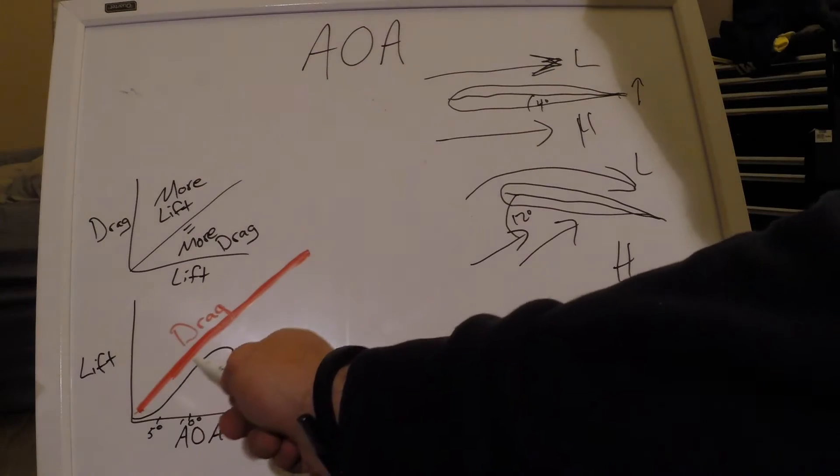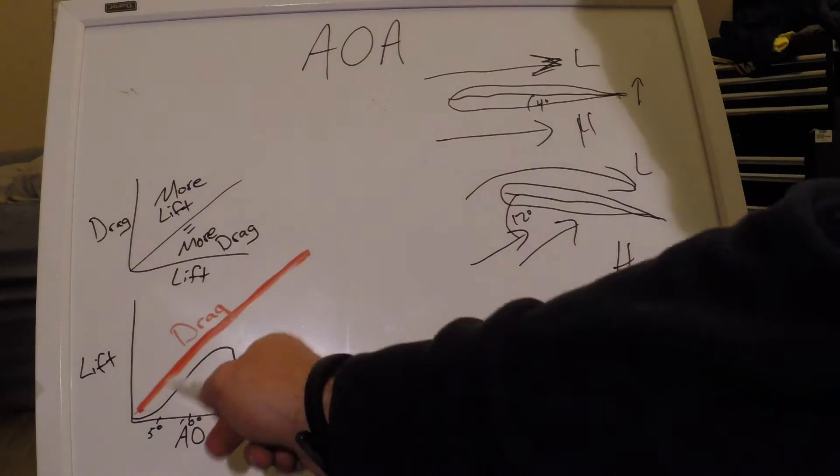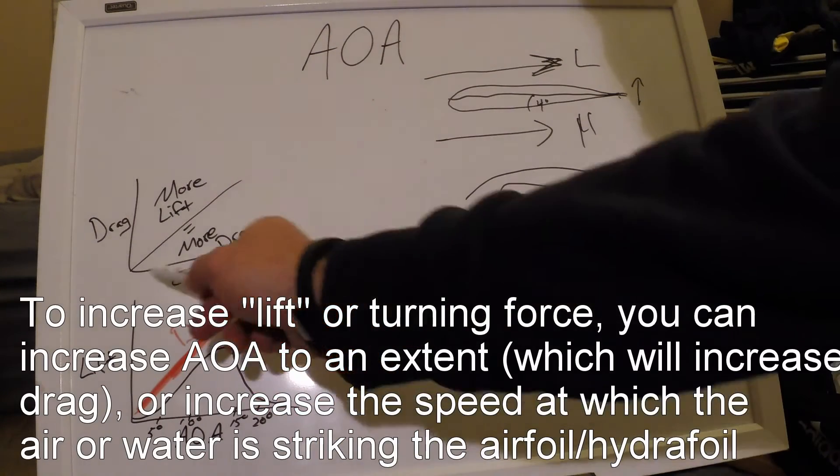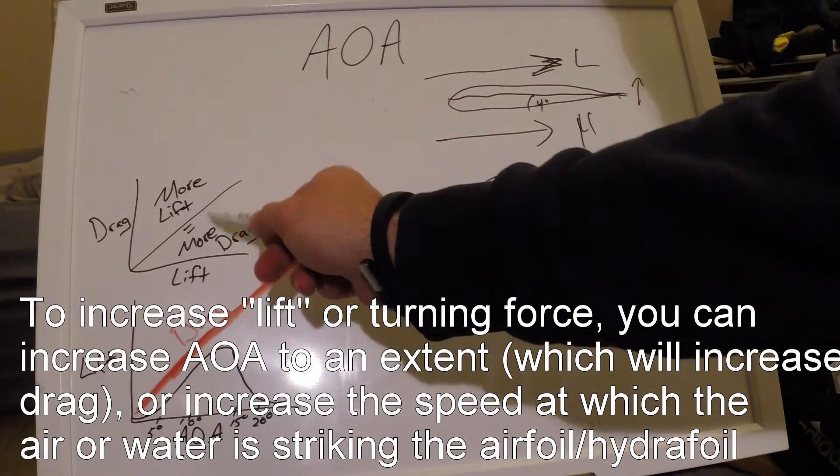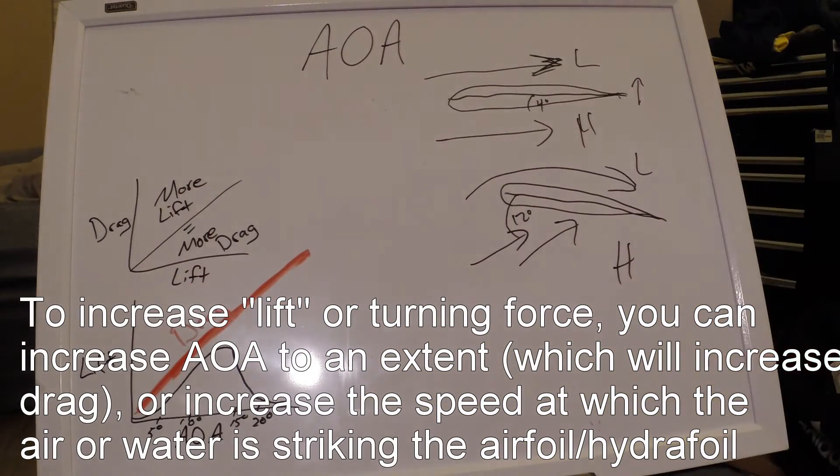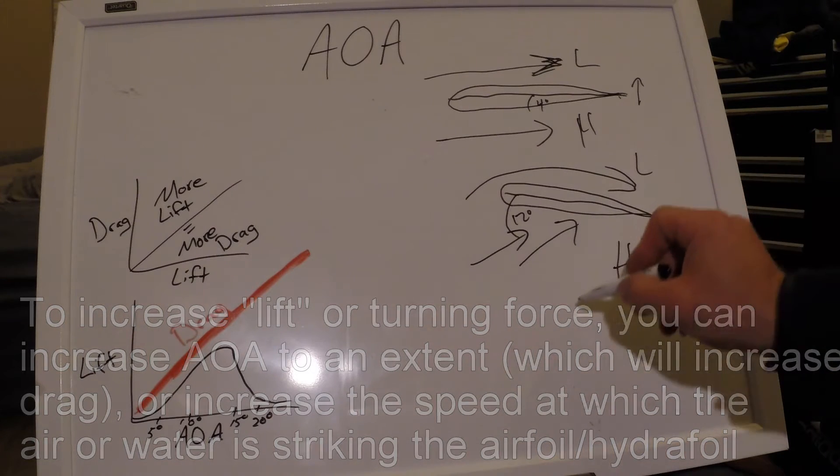We can look over here and see that as our angle of attack increases, our lift goes up and drag also goes up. The more lift we generate, the more drag we generate, so there's really no way around that. If you want to generate lift or turn your boat, you have to create a little bit of drag.